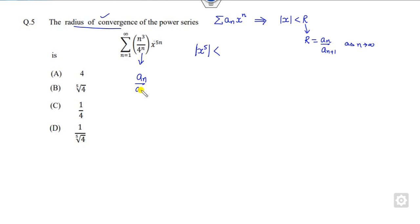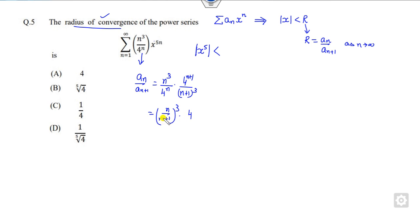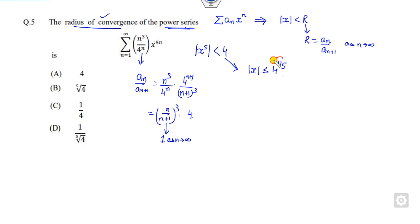So if you find a_n upon a_{n+1}, this is n cubed upon 4^n, divided by (n+1) cubed upon 4^{n+1}. So that is n upon (n+1) cubed, with a 4 separate. This limit goes to 1 as n approaches infinity, so the result is 4. Now your target is to find the radius of convergence of the power series. Since x is x raised to power 5, the radius of convergence is 4 raised to power 1 by 5. You can check which one is the right answer.